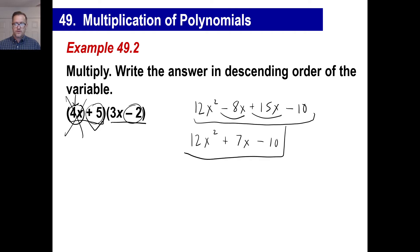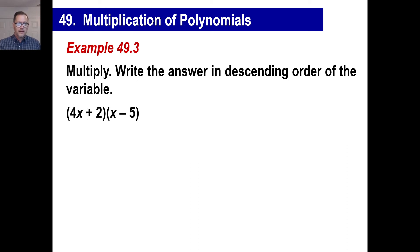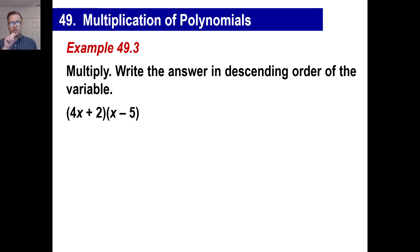And this is your answer. Those three terms make a trinomial. Alright, let's try another one. If you want to pause it and write this down, go ahead and do the 4x times the x minus 5, then do the 2 times the x minus 5. Then combine like terms and see what you have. You'll have a trinomial again.